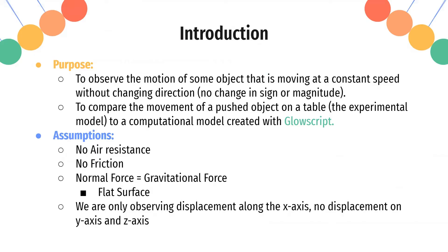And some of the assumptions we're making is that there's no air resistance, there's no friction between the rolling object and the table. The normal force is equal to the gravitational force, so that's going to be a flat surface. We're only observing displacement on the x-axis, not the y or z.